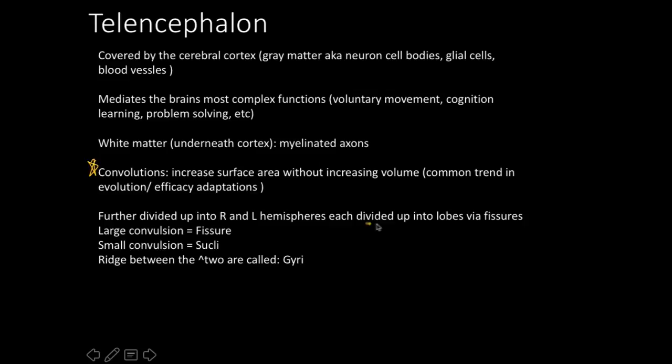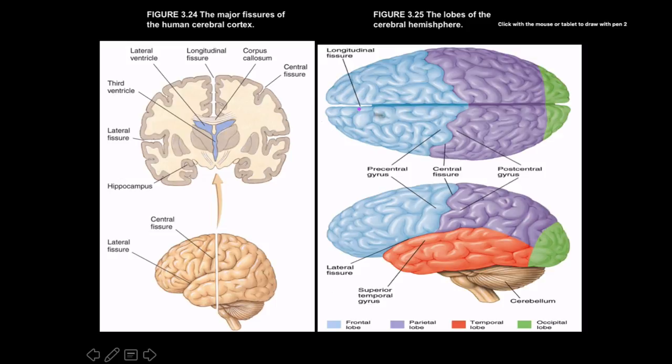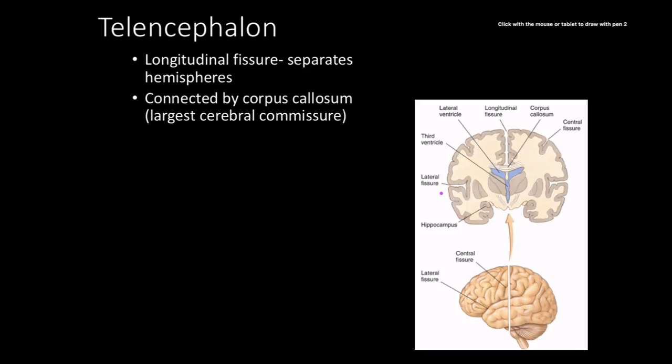The brain is further divided into right and left hemispheres via fissures. Large convolutions are called fissures, small ones are sulci, and the ridge between two sulci is known as a gyrus. A diagram shows the longitudinal fissure, the central fissure, the lateral fissure, the corpus callosum, and the precentral gyrus, illustrating how we divide up the cortex.